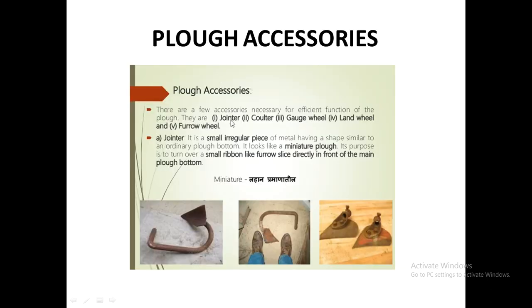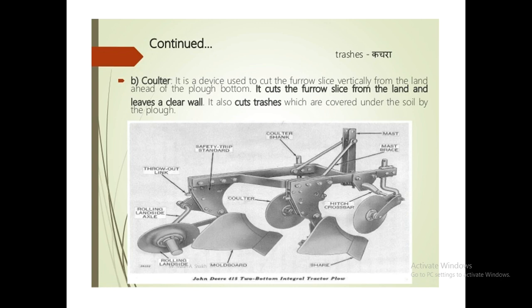Plow accessories are additional components attached to the moldboard plow apart from the main moldboard components. These include the jointer, coulter, gauge wheel, land wheel, and furrow wheel. The jointer is a miniature ordinary plow bottom made of a single piece of metal, similar to a mini plow, attached to the moldboard plow. The coulter is a small disc that cuts the furrow slice ahead of the plow bottom, positioned in front of the moldboard plow.